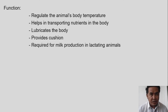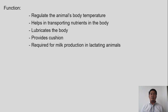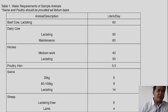You have to take note that the animal's body is composed of about 70% water on average. It differs depending on the kind of animal, but approximately 70% of the animal's body is water. This shows how much water is really needed for animals.